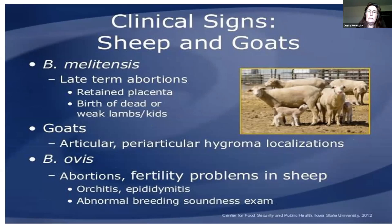Clinical signs in our sheep and goats will be late-term abortions. Additionally in our goats, we can see arthritic types of clinical signs — arthritis as well as late-term abortions might be an indication that you have some type of Brucella problem in your flock or herd. Brucella ovis — this is what we are testing our rams for when we are moving them from state to state.